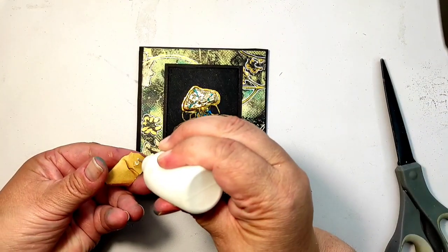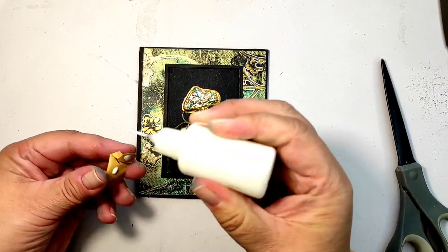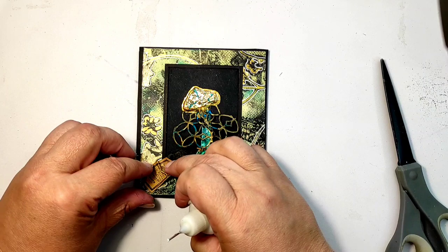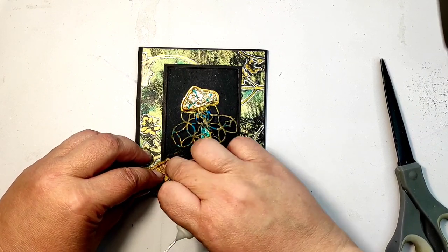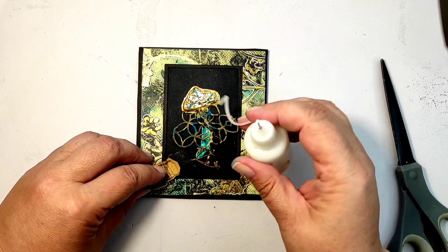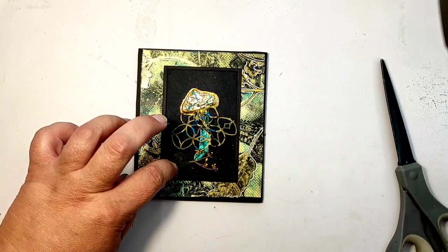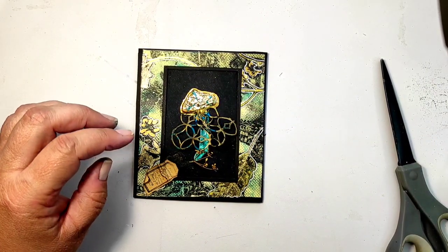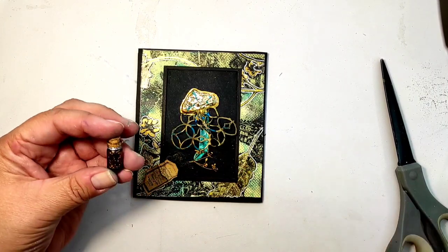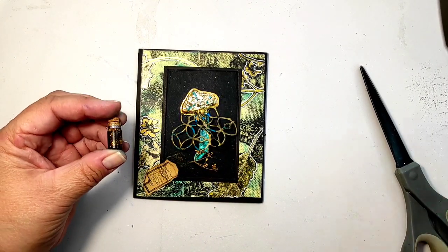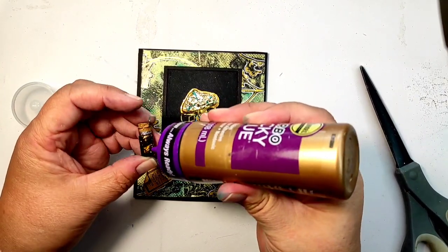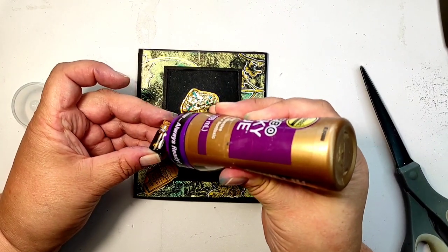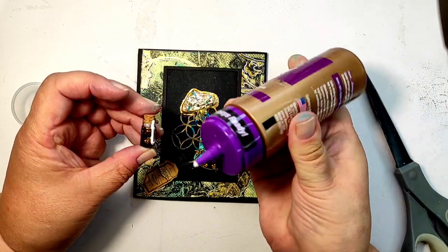And I'm gluing all the elements down in a little cluster in the corner of the frame. So the little label, the piece of plant, the piece of golden flower, and the little glass jar. For that, I will be using tacky glue as I want to make sure that the glass really sticks to the paper. It will become transparent when dry and will not be visible at all.